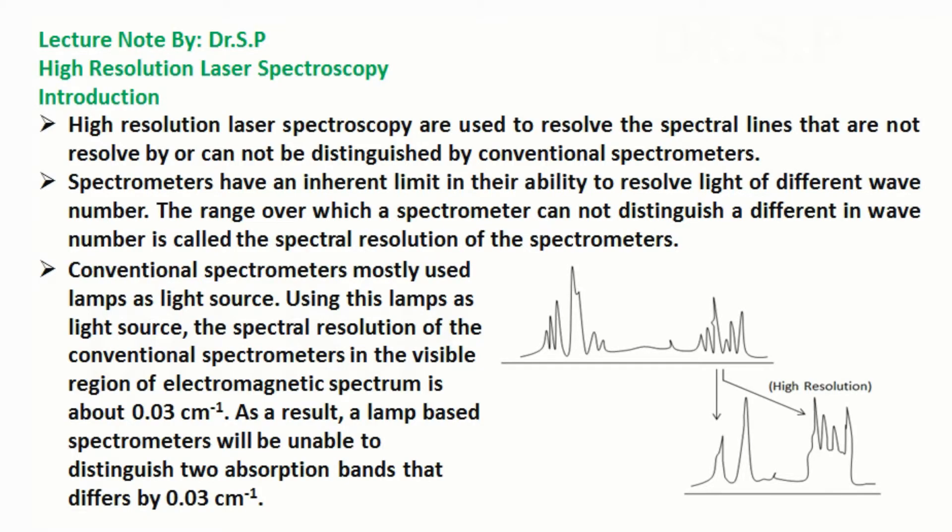High-resolution laser spectroscopy is used to resolve spectral lines that are not resolved by or cannot be distinguished by conventional spectrometers. Spectrometers have an inherent limit in their ability to resolve light of different wave number. The range over which a spectrometer cannot distinguish a difference in wave number is called the spectral resolution of the spectrometers.